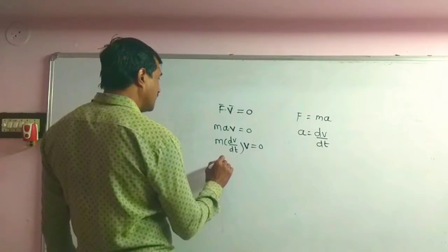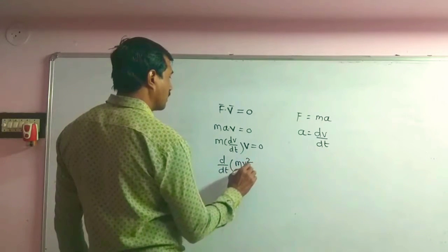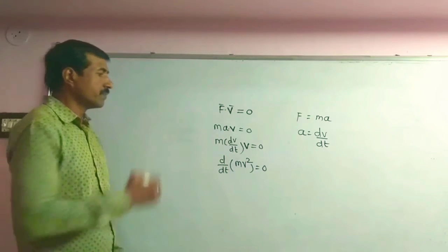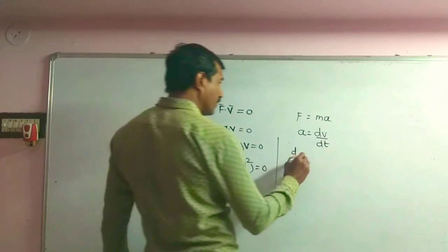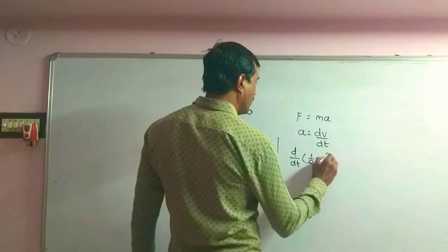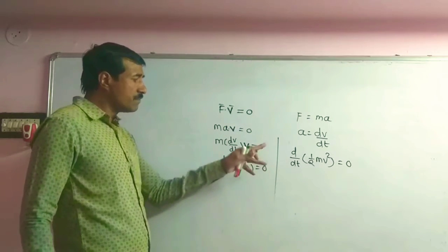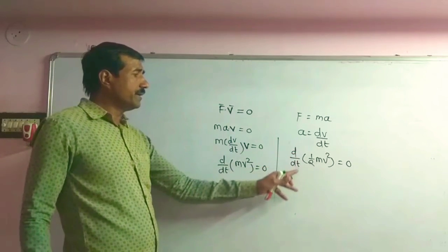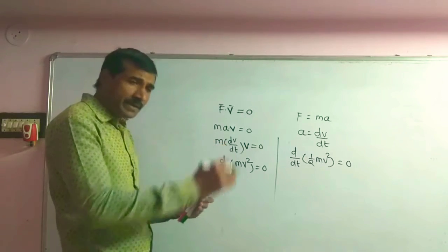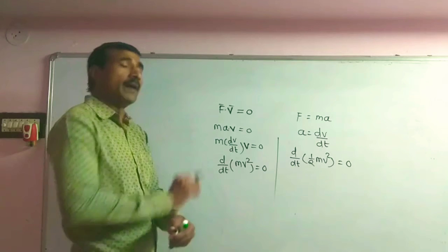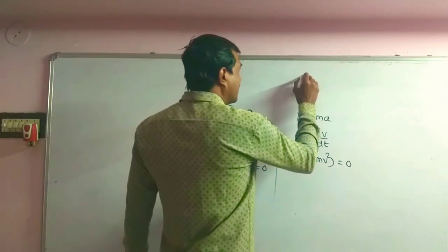So how do we write this? This becomes d/dt of (m·v²) equals zero. We can also write this as d/dt of (½ m·v²) equals zero. If we multiply both sides by ½, the right side remains zero. So d/dt of (½ m·v²) equals zero. If the differentiation with respect to time of any variable equals zero, that variable remains constant.